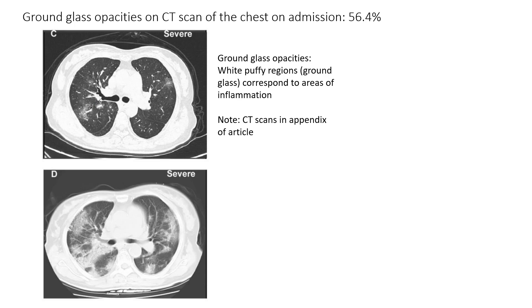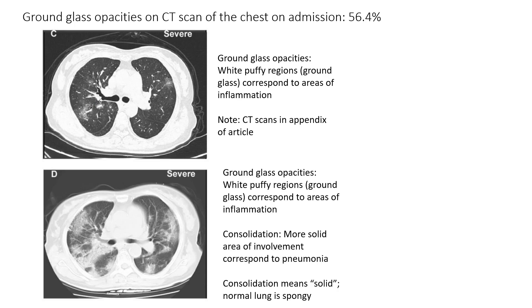In this setting, these white puffy regions correspond to areas of inflammation. Down here is a more severe CT scan. This one also has ground glass opacities — you can see there are white puffy regions here. However, this is much more severe. In addition, this more severe CT scan also has consolidation. Consolidation is a word we use when there are more solid areas of involvement, and these generally correspond to pneumonia in this setting. This darker white area represents an area of consolidation.